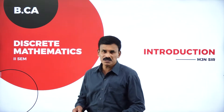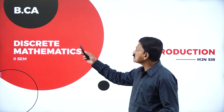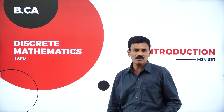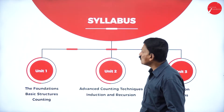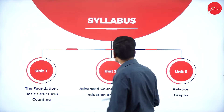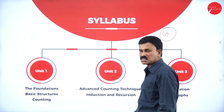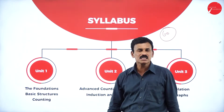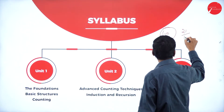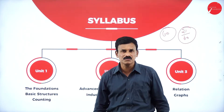The discrete mathematics subject prescribed by the University of Mysore for second semester BCA — the subject is discrete mathematics. You are going to study for 60 marks. The question paper will be set for 60 marks, and the minimum pass is 21 out of 60. So 21 is the passing criteria in this subject.